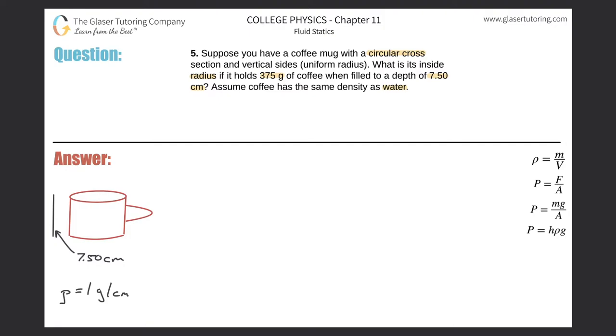The other piece of information they tell us is that when we fill this coffee mug with some amount of water, obviously that water has a certain volume. What we do know is the weight of it. It's filled with 375 grams of coffee, but I'm going to talk about water since it has the same density. So we fill it with 375 grams of water.